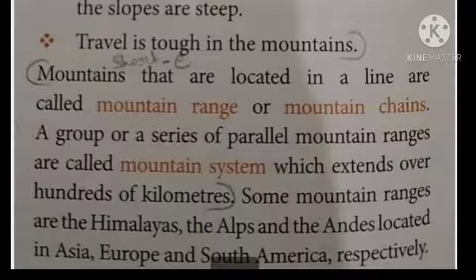A group or a series of parallel mountain ranges are called a mountain system. Mountains which are in a row are called a mountain range or mountain chains, whereas a group or series of parallel mountain ranges is called a mountain system. A mountain system extends over hundreds of kilometers.